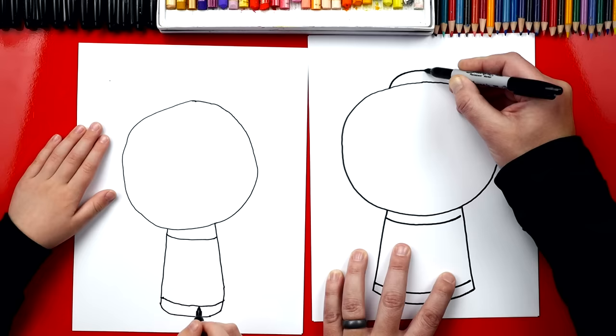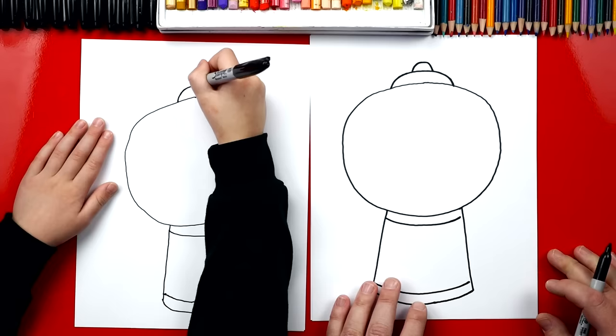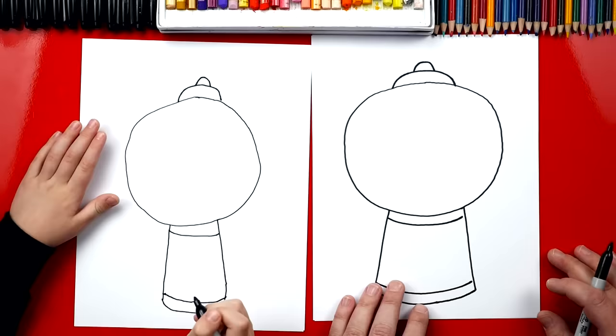Okay. Now let's jump up here to the top and let's put the lid on the top of our gumball machine. So we're going to draw a big rainbow line that goes over the top. Cool. All right. Now let's draw another one on top of that for the very top of our gumball machine.